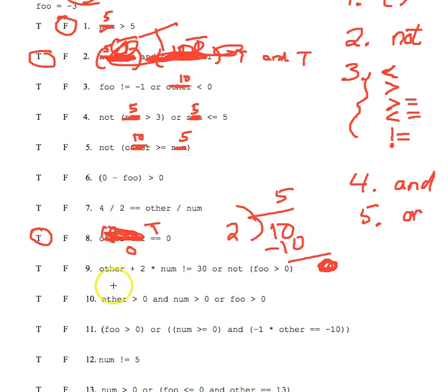Now let's do number nine. Number nine, plug in negative three where you see foo, plug in five for num, and plug in ten for other. Now follow the order of operations carefully. First you do parentheses. Tiana, in the parentheses here, true or false? Negative three, greater than zero. Correct, false.